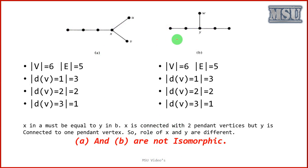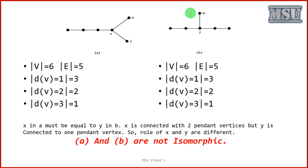Now consider these two graphs. Number of vertices in this graph is 6, number of edges is 5, and here number of vertices is also 6, number of edges is also 5. Number of vertices with degree value 1 is 3, and here also number of vertices with degree value 1 is 3. Vertices W, V, and this particular vertex here — and also this vertex, this vertex, and W on the other graph. Number of vertices with degree value 2 is 2, and here also number of vertices with degree value 2 is 2.